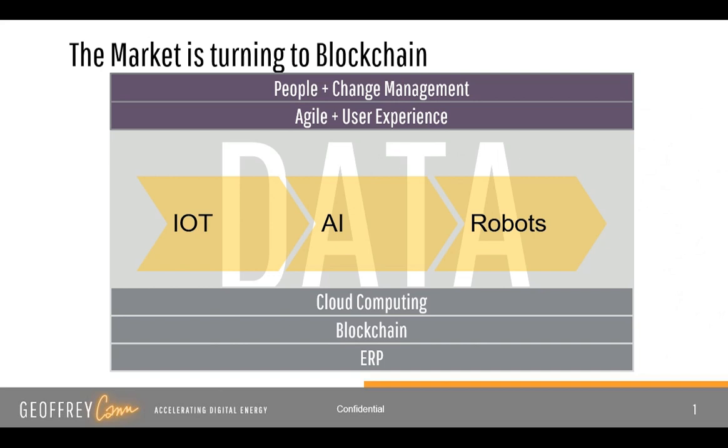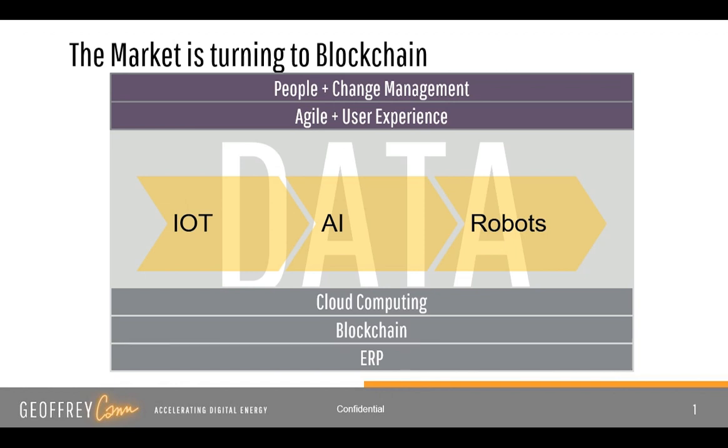It's very important to put blockchain into some kind of relevant context. The Internet of Things, the sensors, the phones that we all have — they generate data, and lots of it. They're generating so much data that we now are turning to artificial intelligence and machine learning to actually read and interpret it. The tools we've used in the past to interpret that volume of data are no longer fit for purpose.